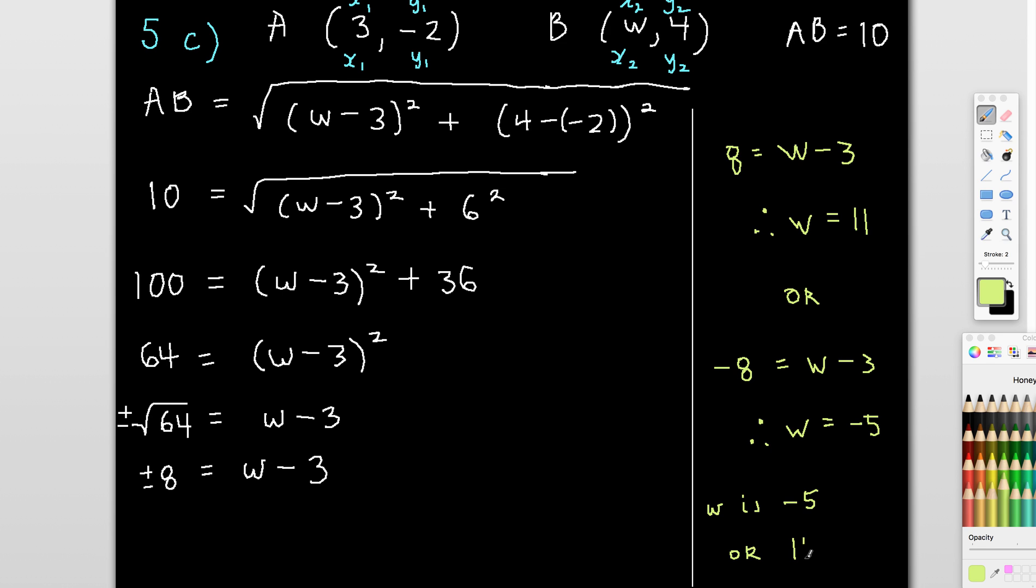So we actually have two answers here. Now, that particular coordinate is either negative 5 or it's 11. Now, the reason that we can get two answers with these is we've been given the distance, which is 10. And there's actually two possible coordinates that will give us the distance of 10 from that point A, the 3, negative 2. I'll show you a drawing of that.